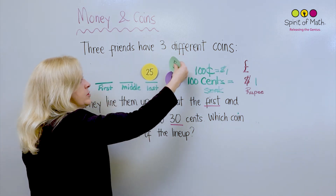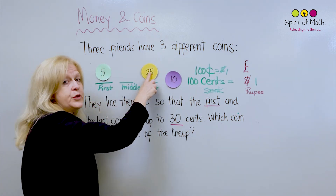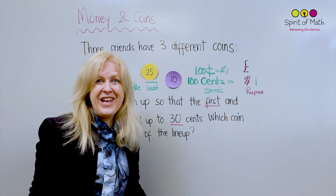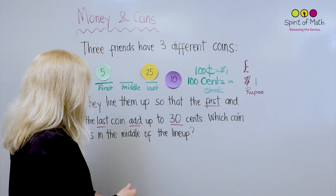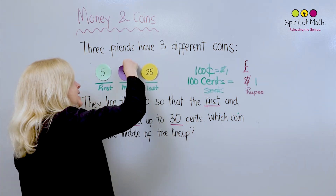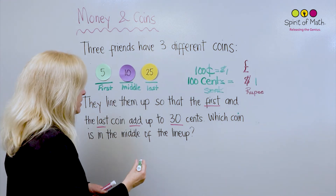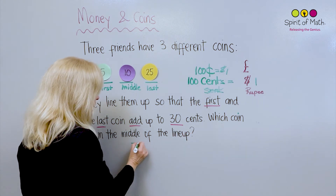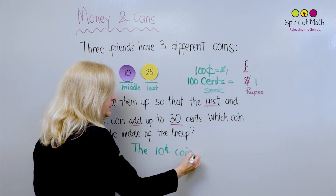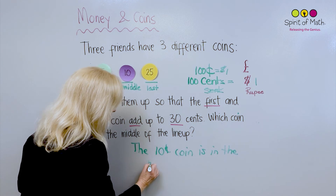Now let's try the option with the five cent coin. We've already done 5 and 10, so now let's do 5 and 25. So 5 plus 25 is 30 — we got it! So which coin is in the middle of the lineup? That means the ten cent coin goes in the middle. The ten cent coin is in the middle.